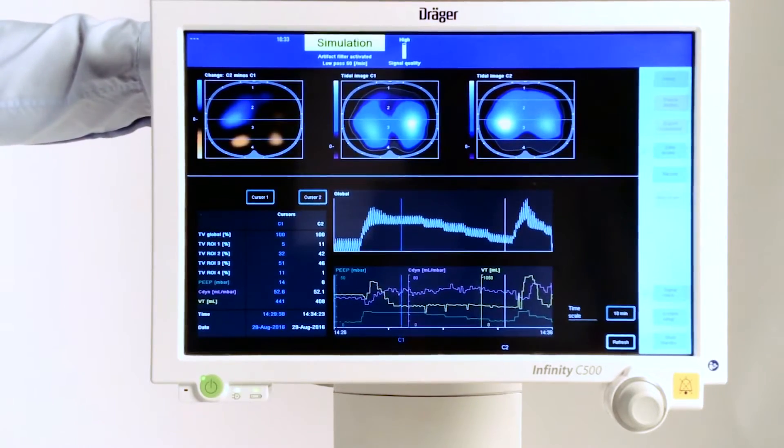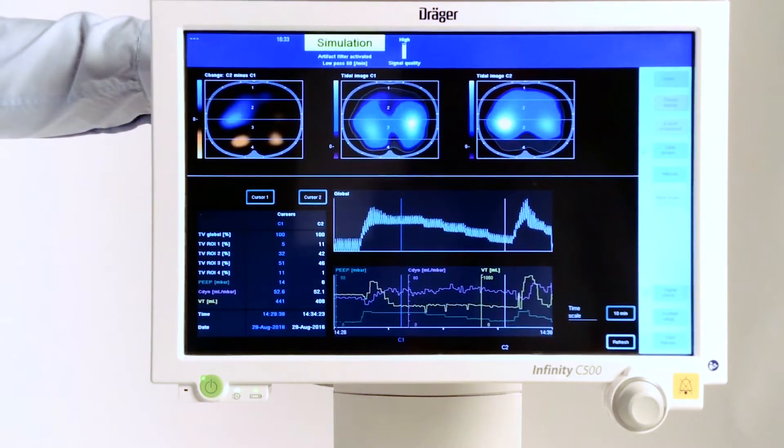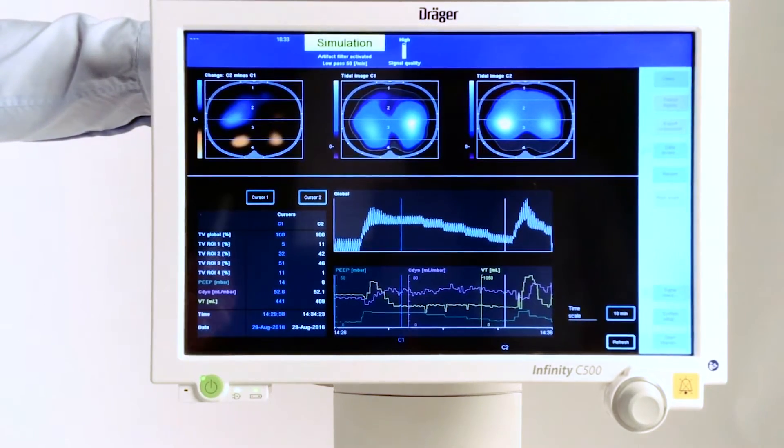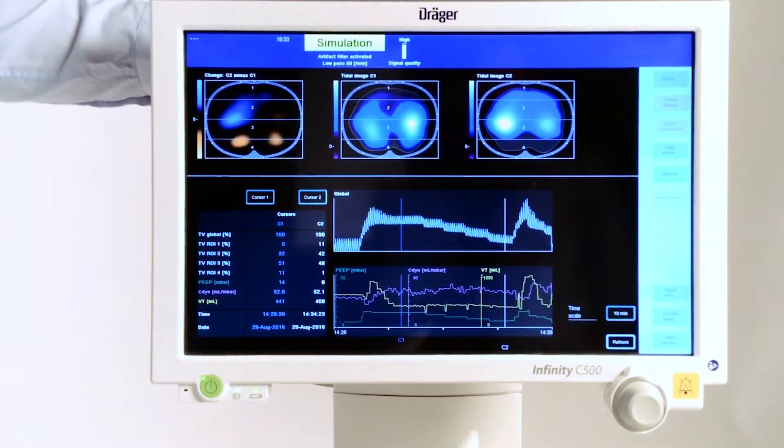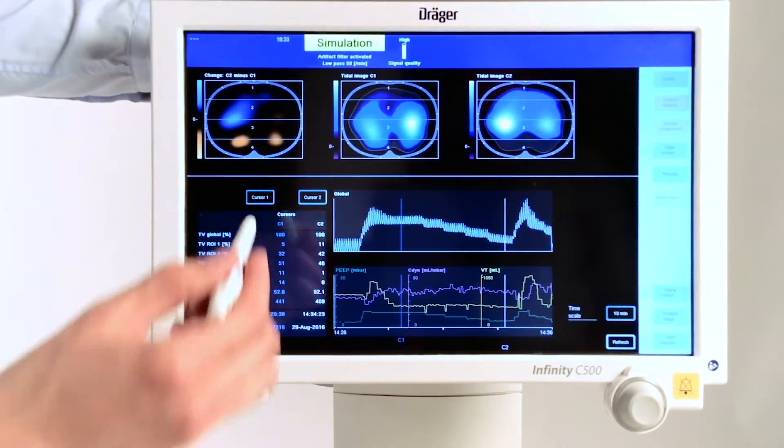In our second video we set our reference at the highest PEEP level in order to assess the onset of derecruitment. Now in order to assess possible overdistension we have to pick a reference level where we do not expect to see any signs of overdistension. That will be the condition at the lowest PEEP level, and this is where we set our new reference.